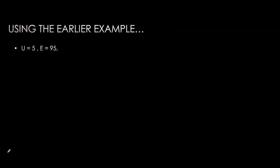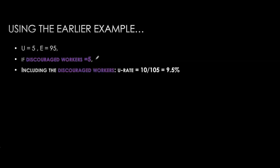In the next example, using the same numbers as before — 5 million unemployed, 95 million employed, for a labor force of 100 million — let's assume there are 5 million discouraged workers. These 5 million were not initially considered part of the labor force because they haven't been looking for work in the past four weeks. If we include them as unemployed, they increase both the numerator and denominator. The unemployment rate rises from 5% to 9.5%.